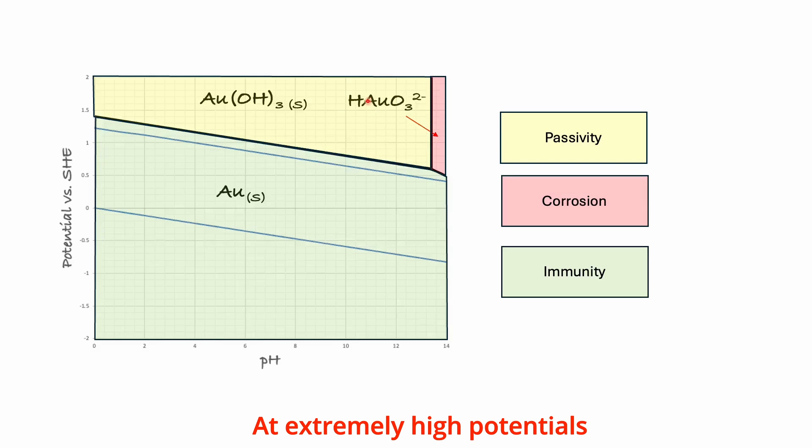At extremely high potentials and pH levels, gold may potentially oxidize, though at lower pH levels, it exhibits passivity due to the presence of stable surface films.